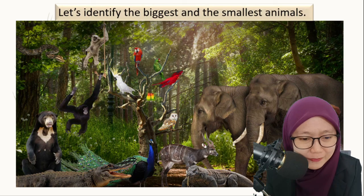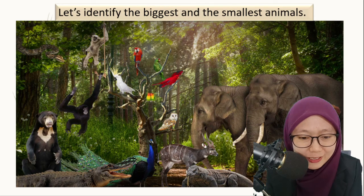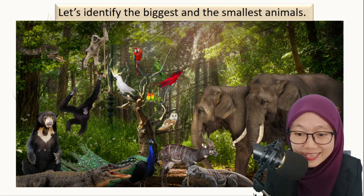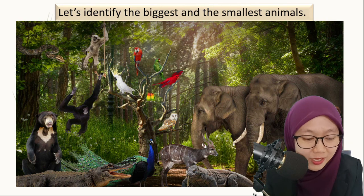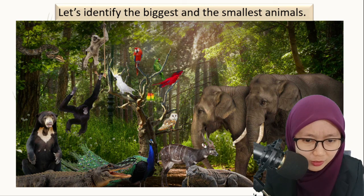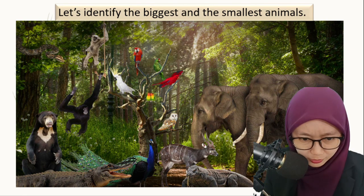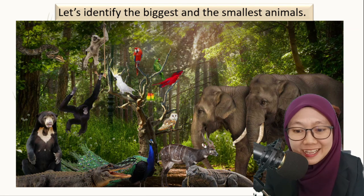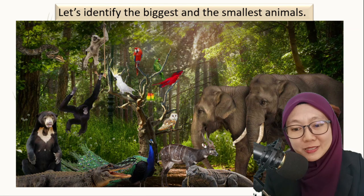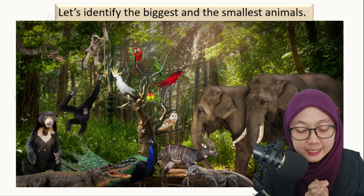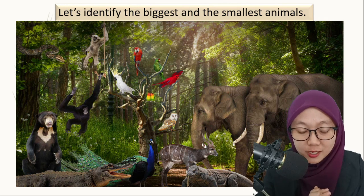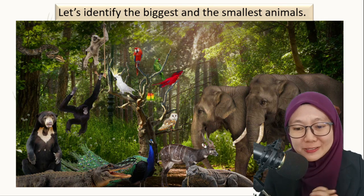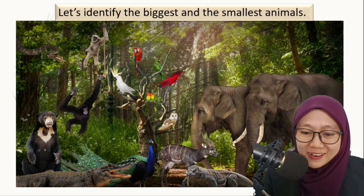Finally, let's identify the biggest and smallest animal. In this diagram, we can see the elephant is the biggest animal. And the smallest animal — I think you know, can you find it for me and write it in the comment section? I think that's it for our lessons today.